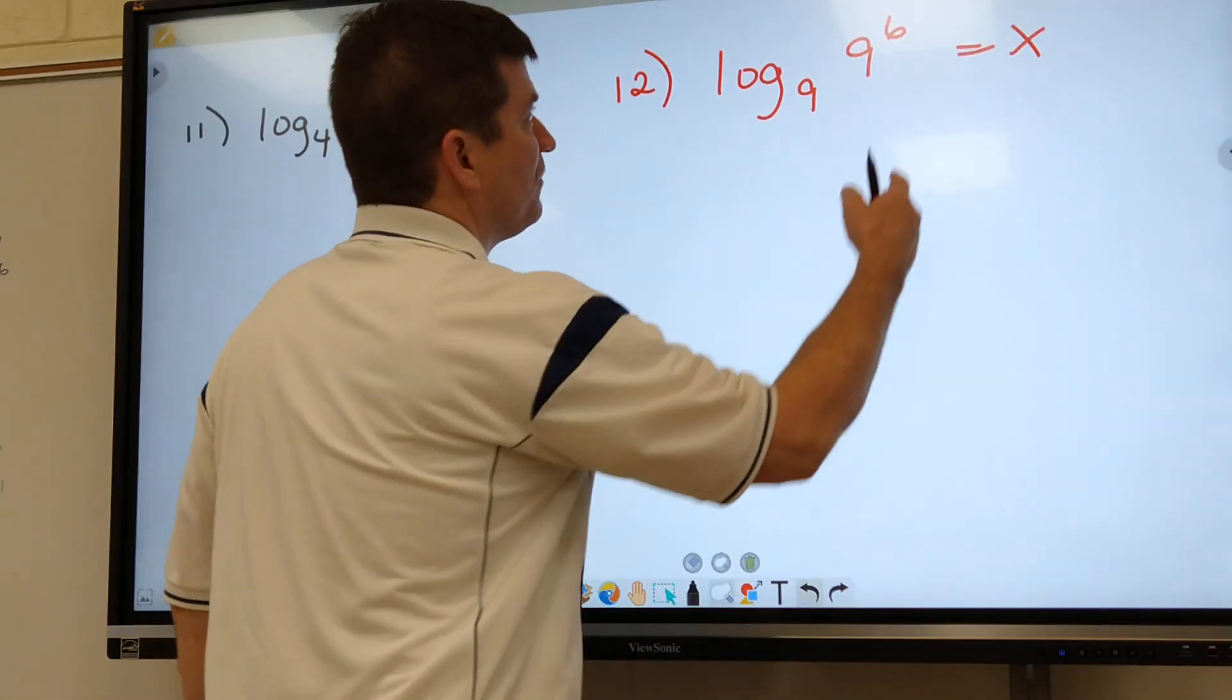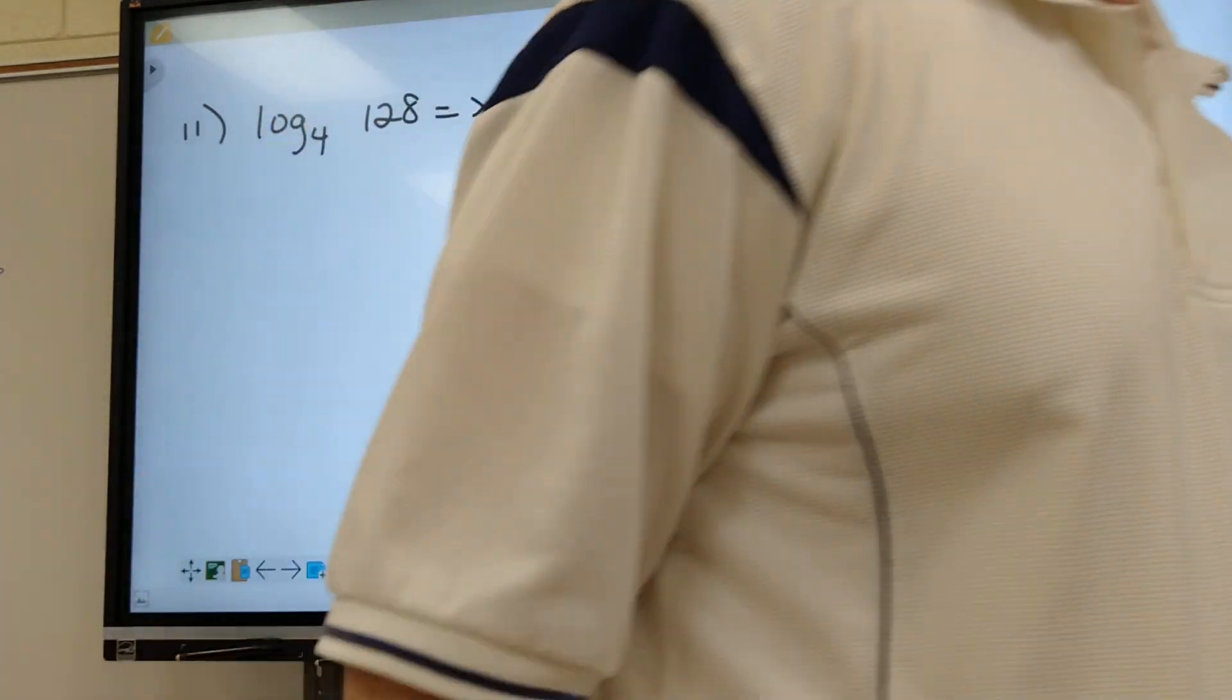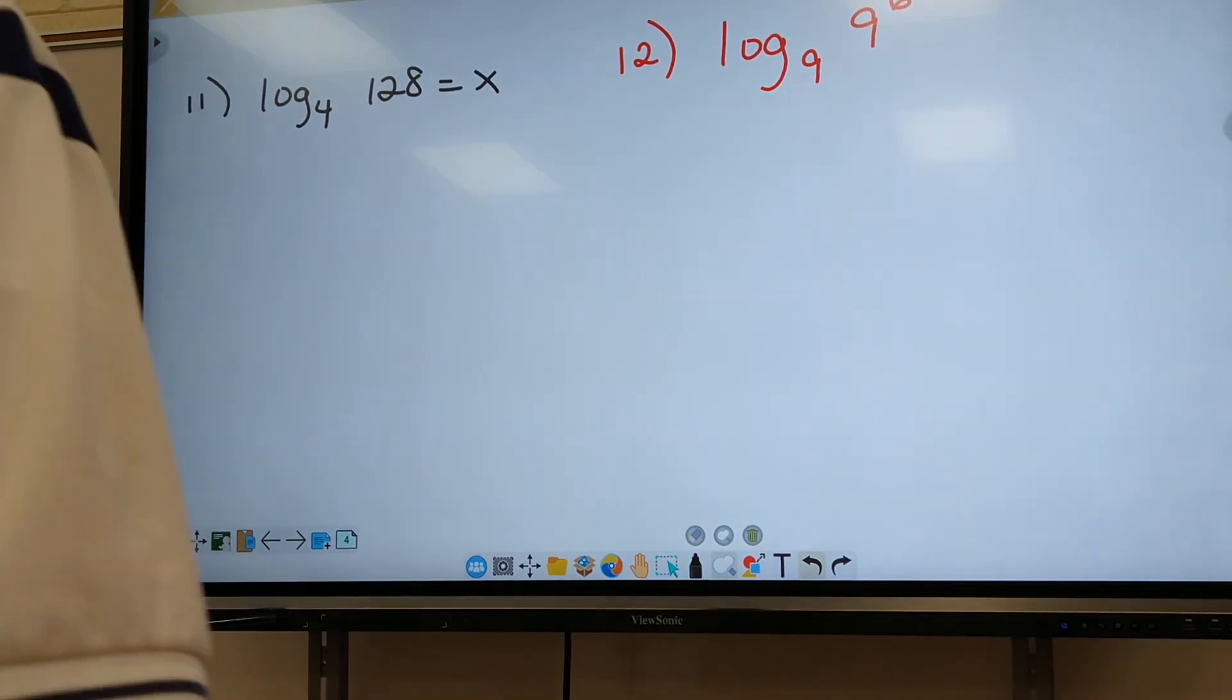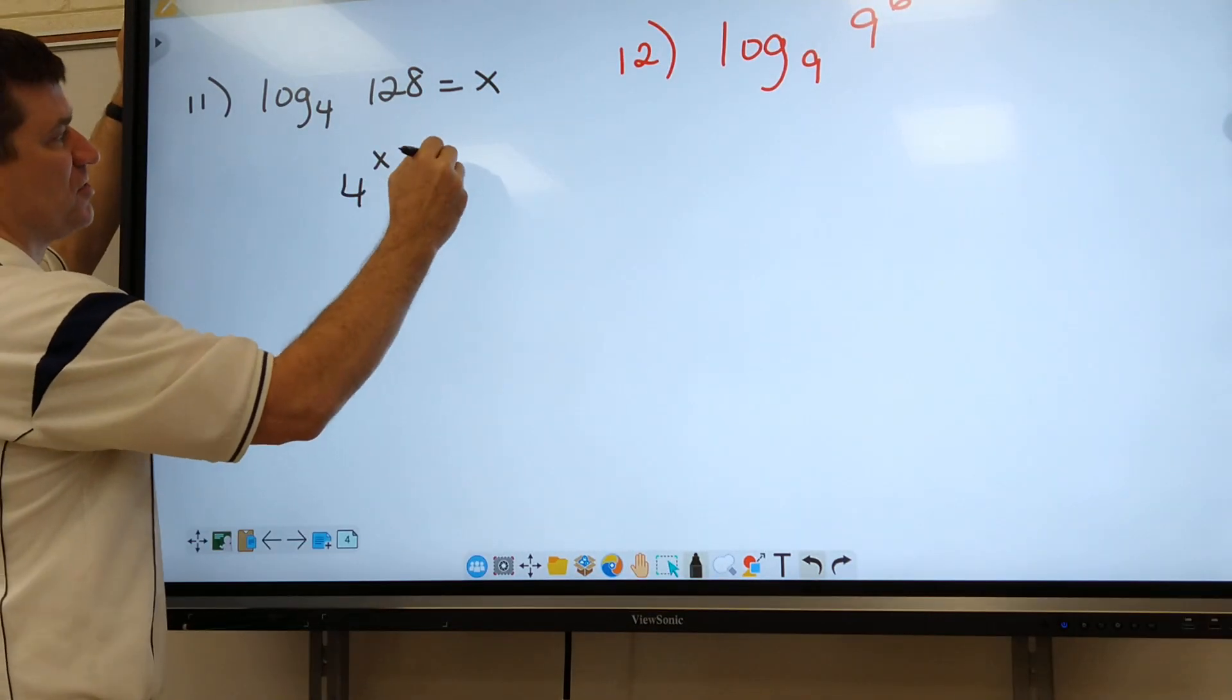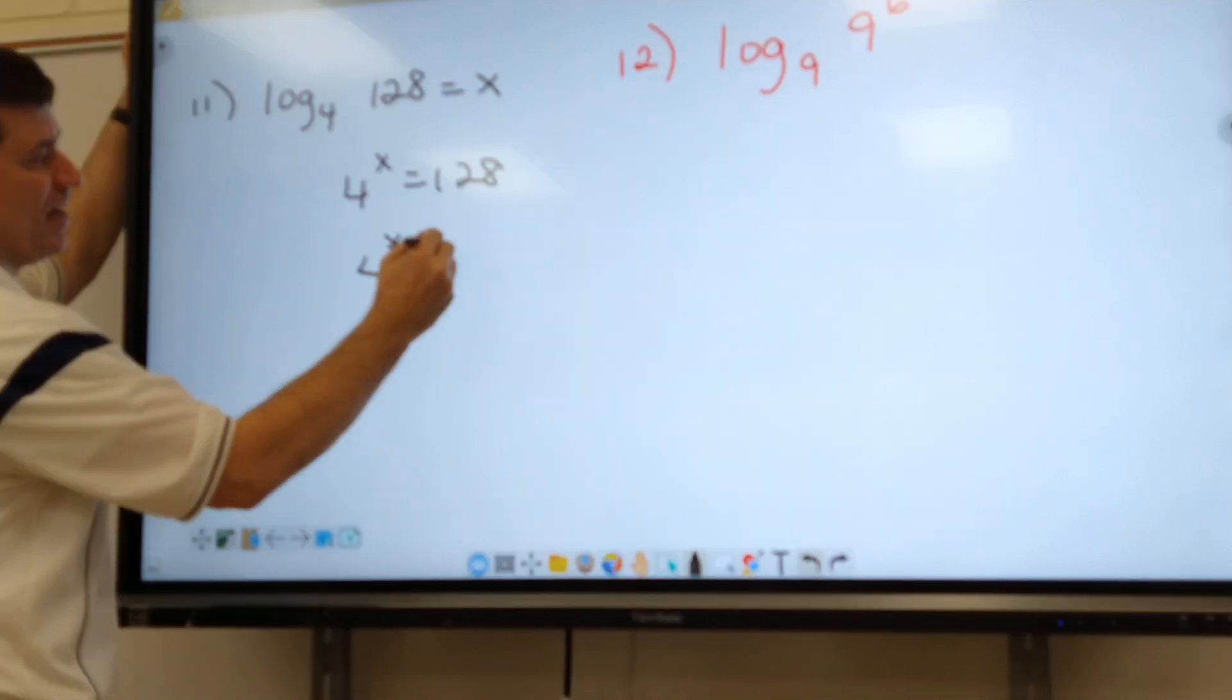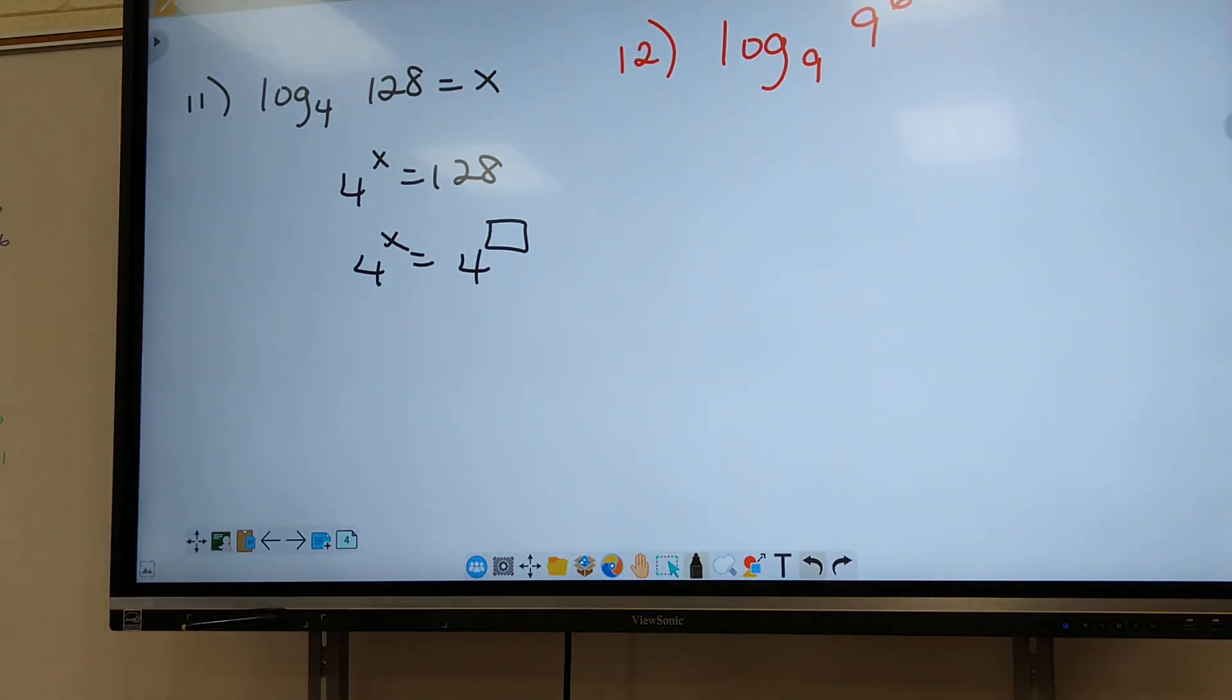All right, copy down 11 and 12. And that wasn't supposed to be there. Copy 11 and 12. Now you actually know. All right, so 11, set it up. We got four to the x equals 128, right? All right, so can I do it this way? Can I turn that into four to some power? Let's check. Nope. Look, there is no four to something that gives you 128. What does that mean? You got to do them both.